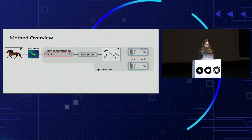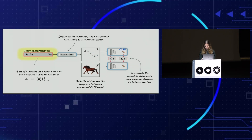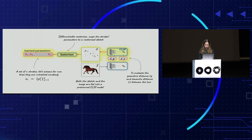Here is the overview of our method, beginning with the optimization part. We start with a set of n strokes, each being a Bezier curve with four control points, initialized randomly. These parameters are fed into a differentiable rasterizer that outputs the rasterized sketch. Both the sketch and the input image are fed into a pre-trained CLIP model to compute a loss distance. Since the entire forward process is differentiable, we back-propagate gradients through the frozen CLIP model and rasterizer to update the stroke parameters iteratively until convergence.